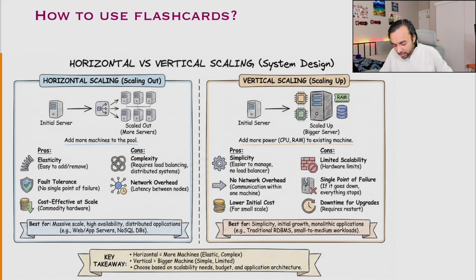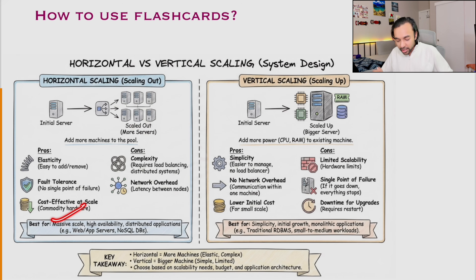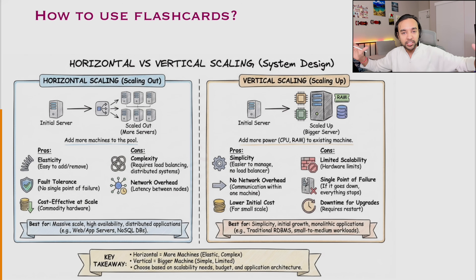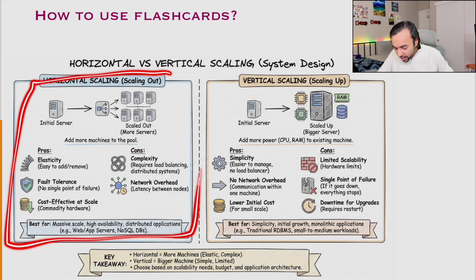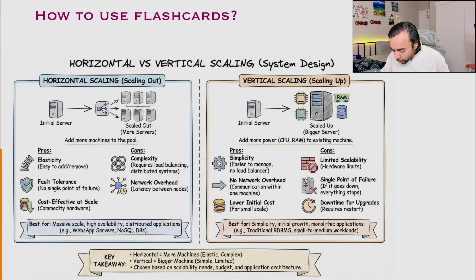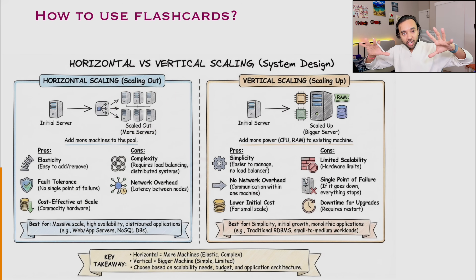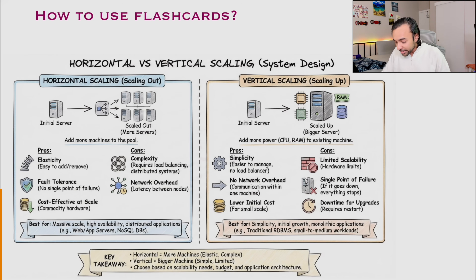You can just remember this diagram and everything will start coming back to you. So what does horizontal scaling give you? It gives you elasticity because you can easily add more servers. It gives you fault tolerance — if one server dies, you still have more servers available. It is also cost effective because it is easier to have multiple smaller servers rather than one huge giant server. Though the complexity and network overhead mean such a structure is harder to manage.